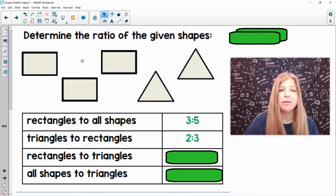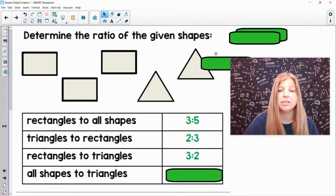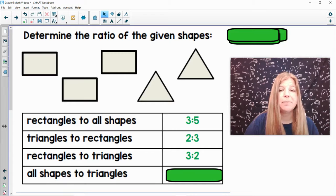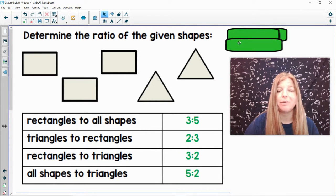Rectangles to triangles. So rectangles is three to triangles is two, so three to two. Notice my ratio is always in the exact order that the words are in. And last one. All shapes to triangles. There's five total shapes. There's two triangles, and so that would be five to two.